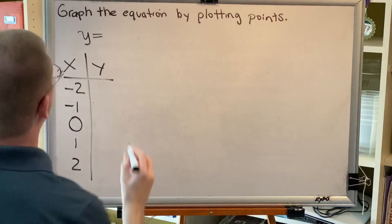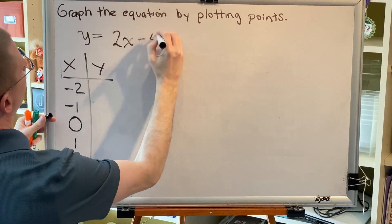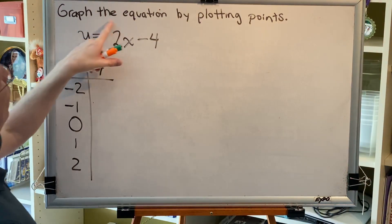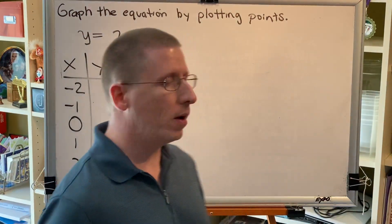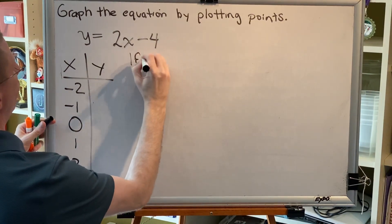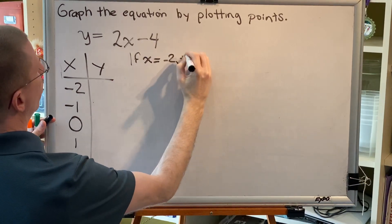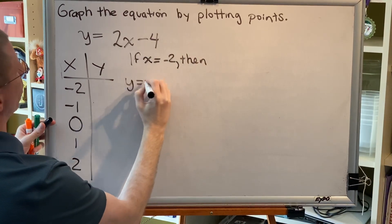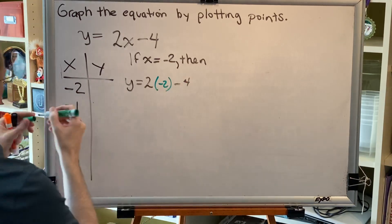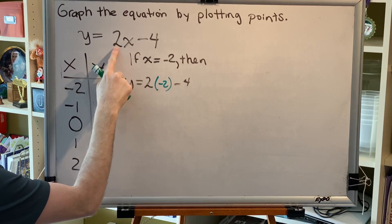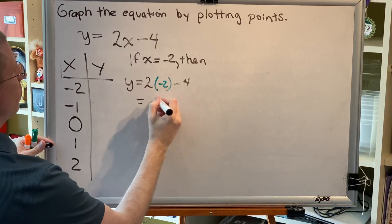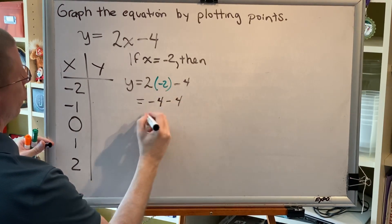Our next equation is y equals 2x minus 4. You may recognize this as a line, and there are many methods for graphing lines, but the instructions for this problem specifically say that we have to graph the equation by plotting points, so we must use the method required, using the same x values as before. If x equals negative 2, then y equals 2 times (negative 2) subtract 4. Notice that the x we're replacing with a number has a multiplying neighbor, so it must be put in parentheses. 2 times negative 2 is negative 4, and negative 4 subtract 4 is negative 8.